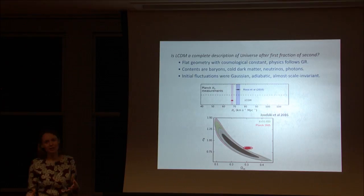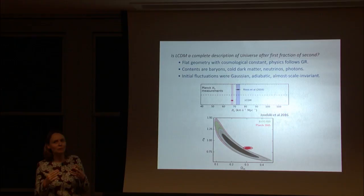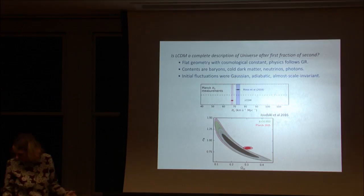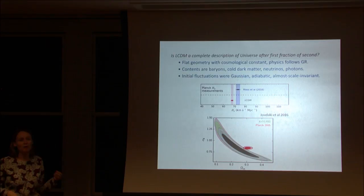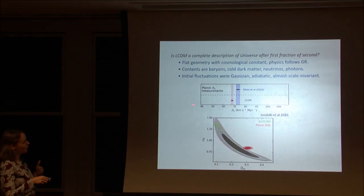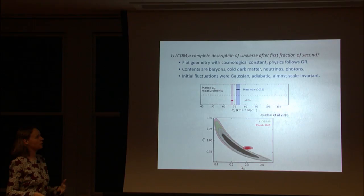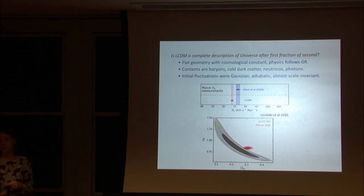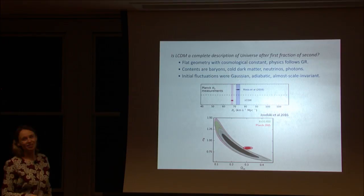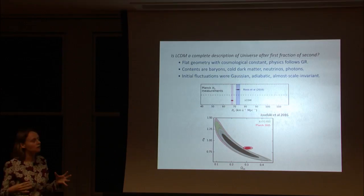This model is doing phenomenally well at describing our data, but there are a couple of teasing hints of things being different. One is the measurement of the Hubble constant: assuming Lambda CDM and using CMB measurements gives a prediction of around 67 km/s/Mpc, while Adam Riess's team measures it locally at around 73, differing at about three sigma. Three sigma isn't enough to break the model, and there could be systematic effects in both measurements.